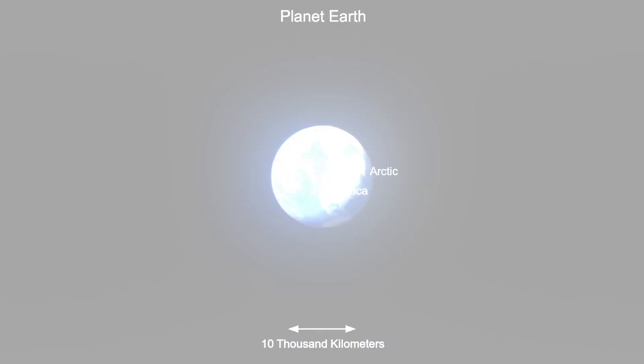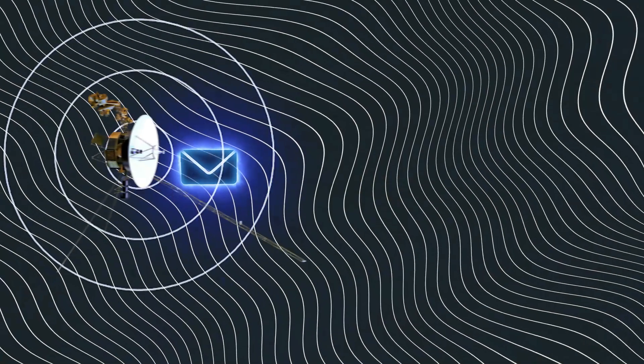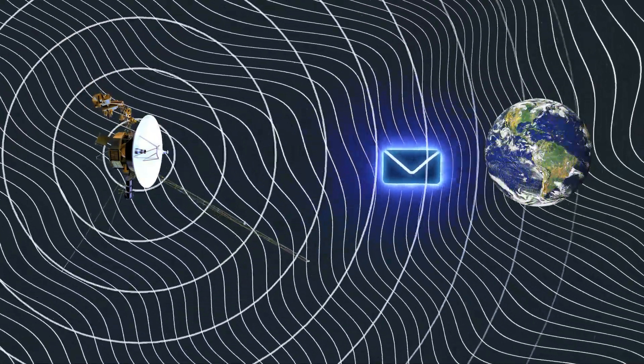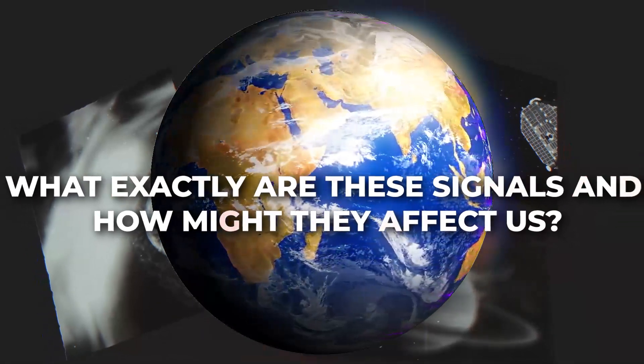Despite its mission being designed for just a few years, Voyager continues to send us data, and recently it transmitted a potentially alarming message that could change everything we know. What exactly are these signals, and how might they affect us?